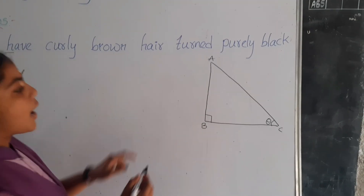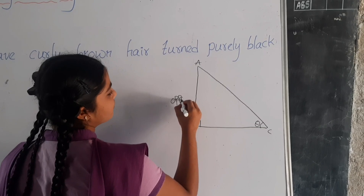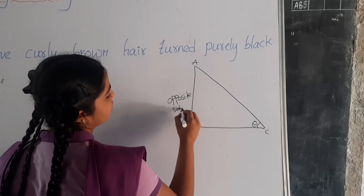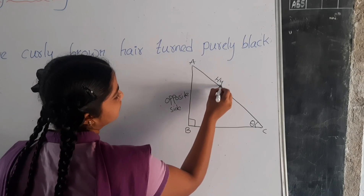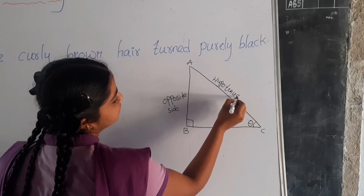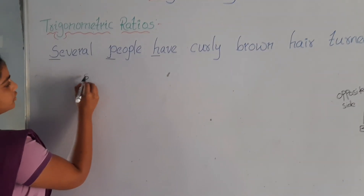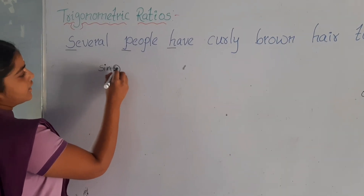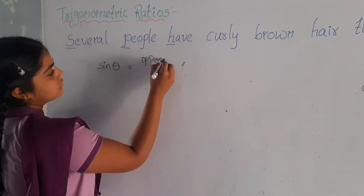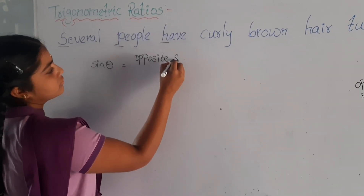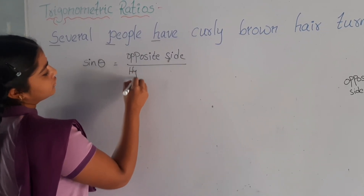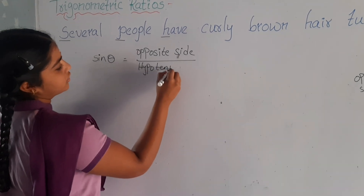That means sin theta is equal to opposite side by hypotenuse.